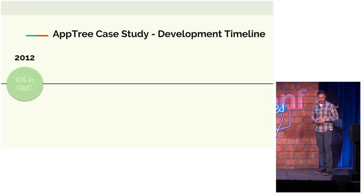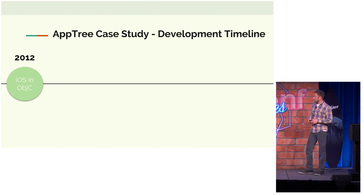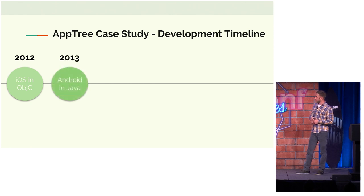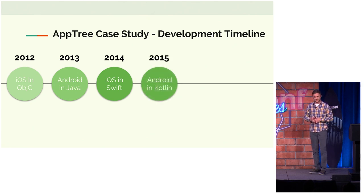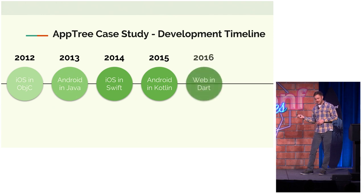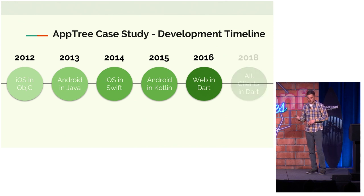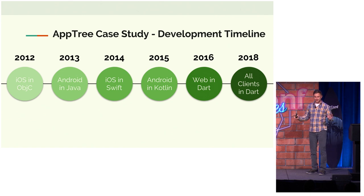I'm going to talk a little bit about our path to Flutter. We started back in 2012, and we wanted to be mobile-focused. We wrote our iOS app in Objective-C, and in 2013 we wrote our Android app in Java. We then rewrote our iOS app in Swift and our Android app in Kotlin. Then in 2016, we wanted to add web to our platform, so we chose Dart. And now in 2018, all of our clients are written in Dart, and we are in the process of releasing that.